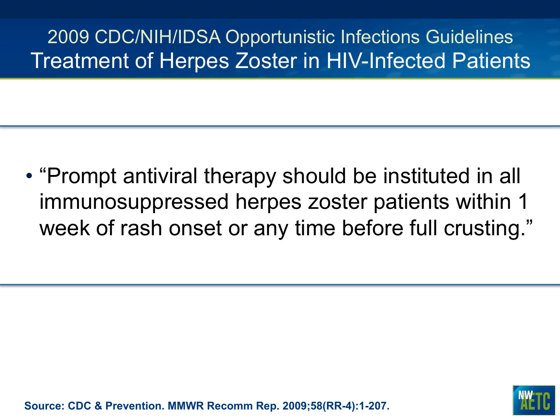The correct answer is yes. According to the DHHS, CDC, and NIH 2009 OI prevention guidelines, prompt antiviral therapy should be instituted in all immunosuppressed herpes zoster patients within one week of rash onset or any time before full crusting. This individual's CD4 count was less than 200 at the time he presented with herpes zoster lesions.